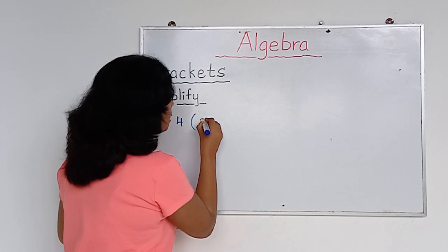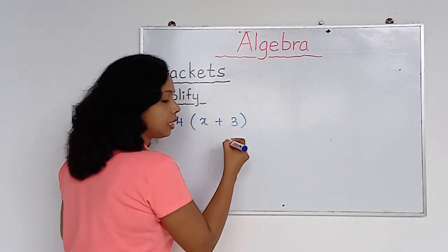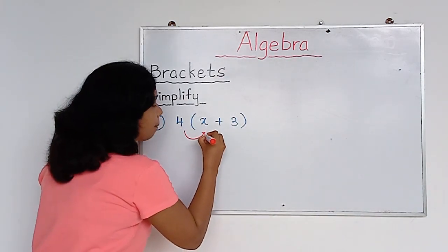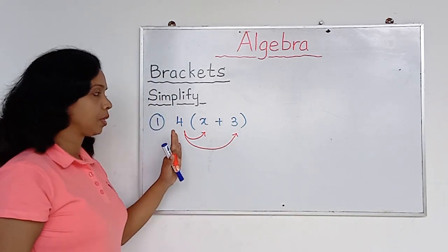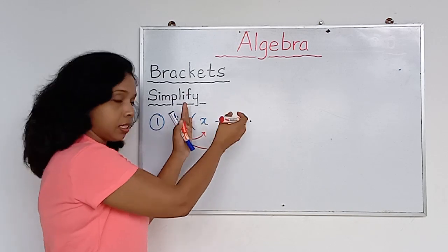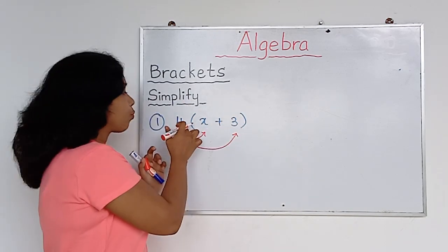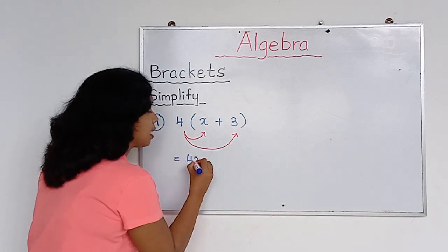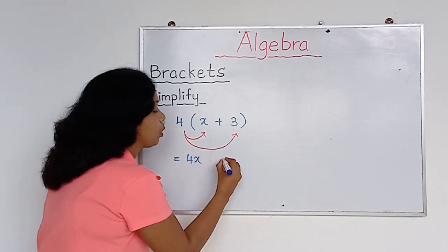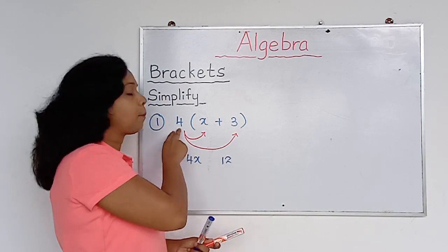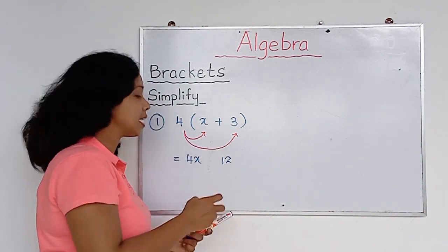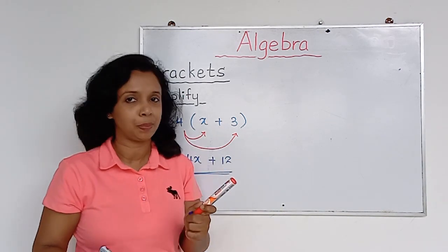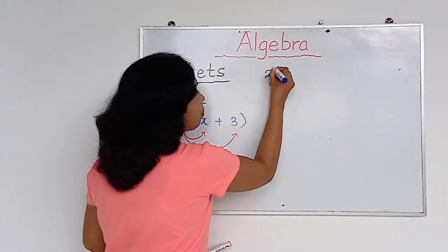Question number one: 4 times bracket (x + 3). Look at this — how can you simplify this? The 4 belongs to both x and 3, meaning the whole bracket. So: 4 times x gives 4x, then 4 times 3 gives 12. The sign is plus, so the answer is plus 12. The final simplified answer is 4x + 12.